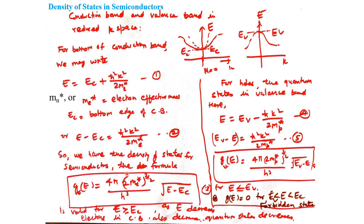Using the general density of states formula and substituting (E − E_C) in place of E, we get: g(E) = (4π / h³) × (2m_e*)^(3/2) × √(E − E_C). If E − E_C is larger, more states are occupied and more electrons are in the conduction band. As E decreases toward E_C, fewer electron states exist in the conduction band.